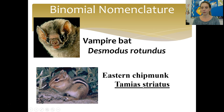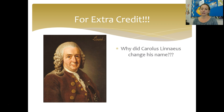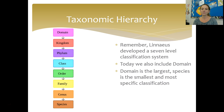Here's the scientific name of humans, which you've probably heard before: Homo sapiens. And here's a little extra credit: Carolus Linnaeus wasn't born Carolus Linnaeus — he was actually born Carl Linnaeus. Look up why he changed his name; it has to do with classification. An extra credit point if you can come up with the answer. Remember, Carolus Linnaeus did two things: he came up with binomial nomenclature, this two-name naming system, and he came up with a seven-level taxonomic hierarchy.